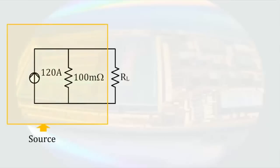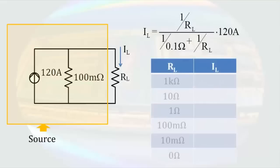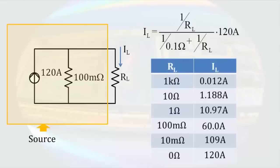Remember, to do current division, we look at the conductance we're interested in divided by the sum of conductances in parallel times the total current seen by the parallel combination. If we analyze this for all the same load resistors, we'll find the load currents will be as follows. If our short-term memory is working properly, these values should look very familiar.